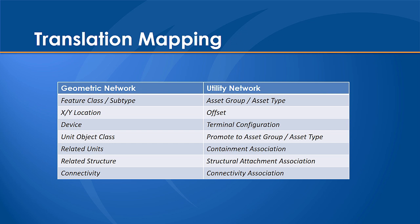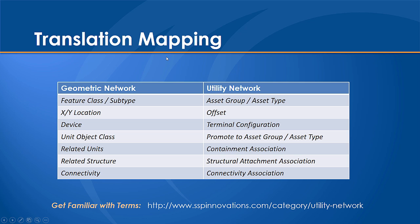Things that we are going to map within this include things in the geometric network such as feature class and subtype, moving to an asset group and asset type. We're handling offsets, terminal configurations of your utility network. We're promoting unit data where appropriate from being related objects into asset groups and asset types, containment associations, structural attachment associations, and connectivity associations. If you're not familiar with these terms, we advise you to go ahead and read our blogs that have a fair bit more information.